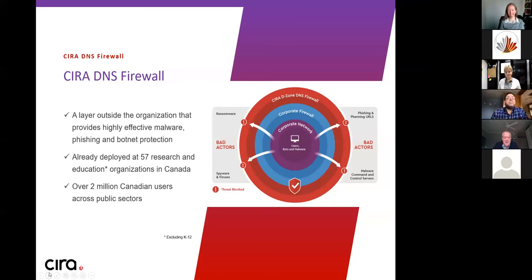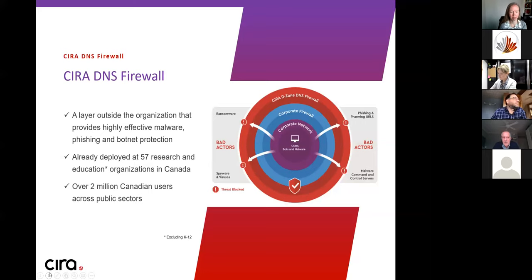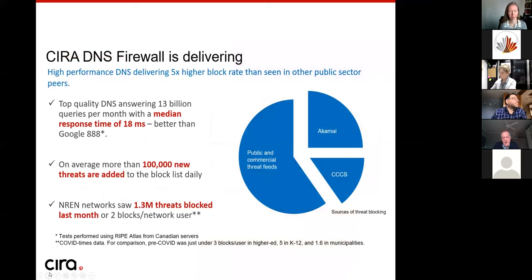Most malware uses DNS at some level. Even the SolarWinds breach of the US government — that malware was distributed as product updates for SolarWinds, but once operated it did command and control DNS reachouts to specific domains, so you could disable it at that level. Right now, there are over 50 universities, colleges, and CJAPS research networks using the service among another 300 to 400 customers. We're protecting more than 2 million users — lots of K to 12, higher ed, plus businesses and more than 100 cities in Canada. The service has been in market for over three years.